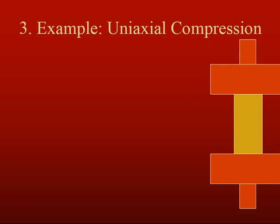Now I want to talk about measurements made in a lab using a uniaxial compression device. This instrument has two large pieces of metal on the top and bottom — like big round objects that are, in essence, a lot like a trash compactor — that push down as a machine to compress material in between them. Think of this as a cylinder of rock in here, and the reason this is called uniaxial is we're just compressing it in one direction, not in the others.